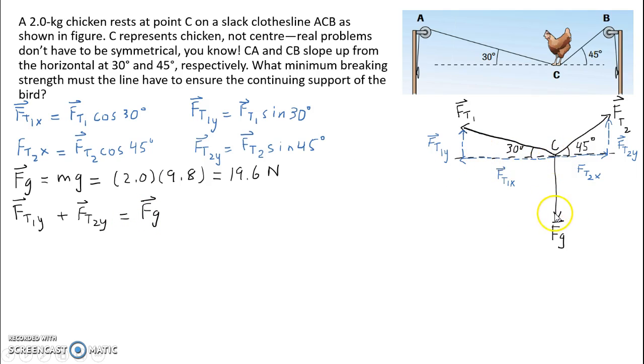These two forces, the vertical forces FT1y and FT2y, will need to balance the force of gravity in order for the chicken to not move up or down and remain at rest. So there's no net force in the vertical dimension. What we get is FT1 sin 30, that's what FT1y is equal to, plus FT2 sin 45 is equal to 19.6, the force of gravity on the chicken.